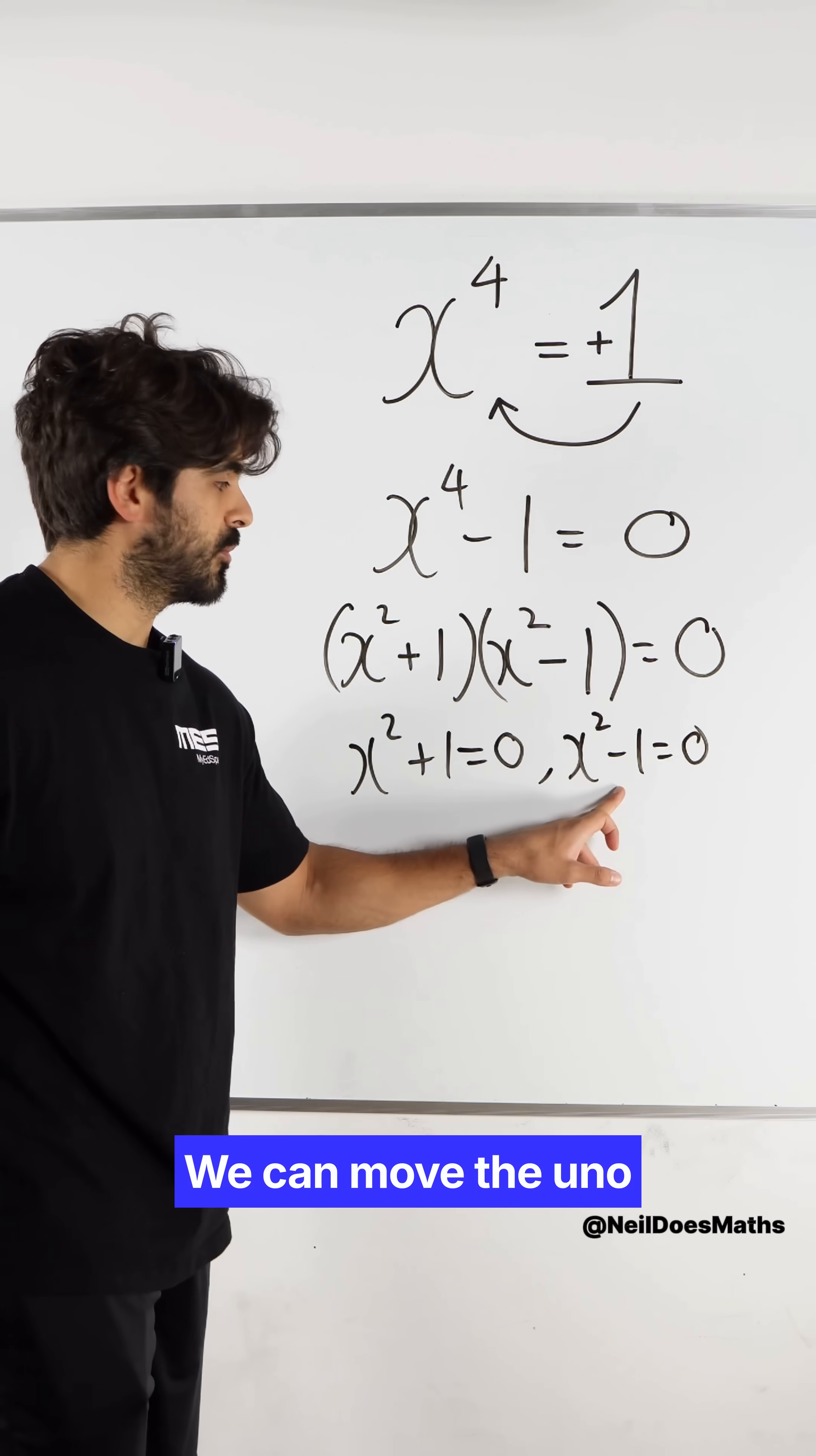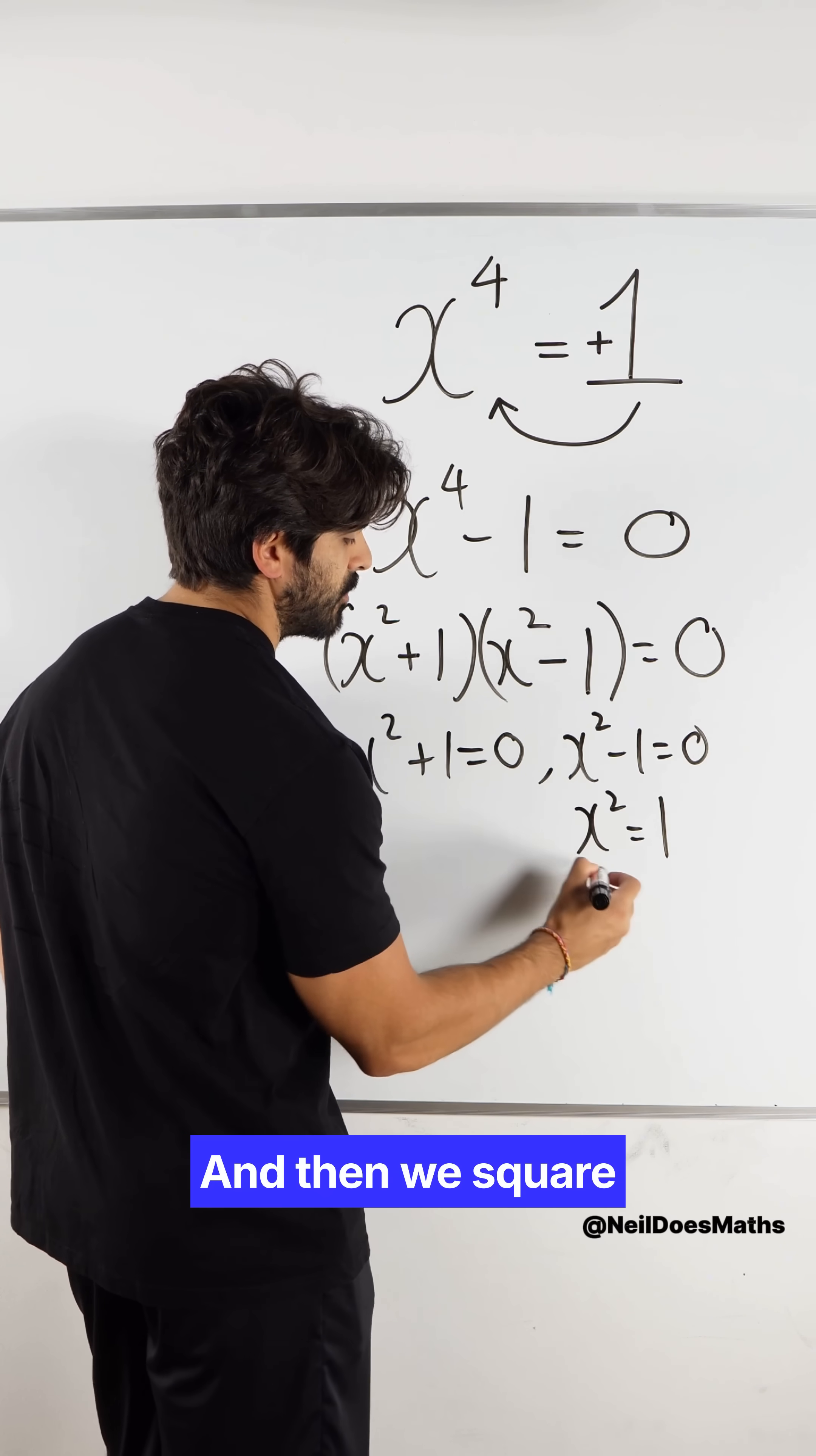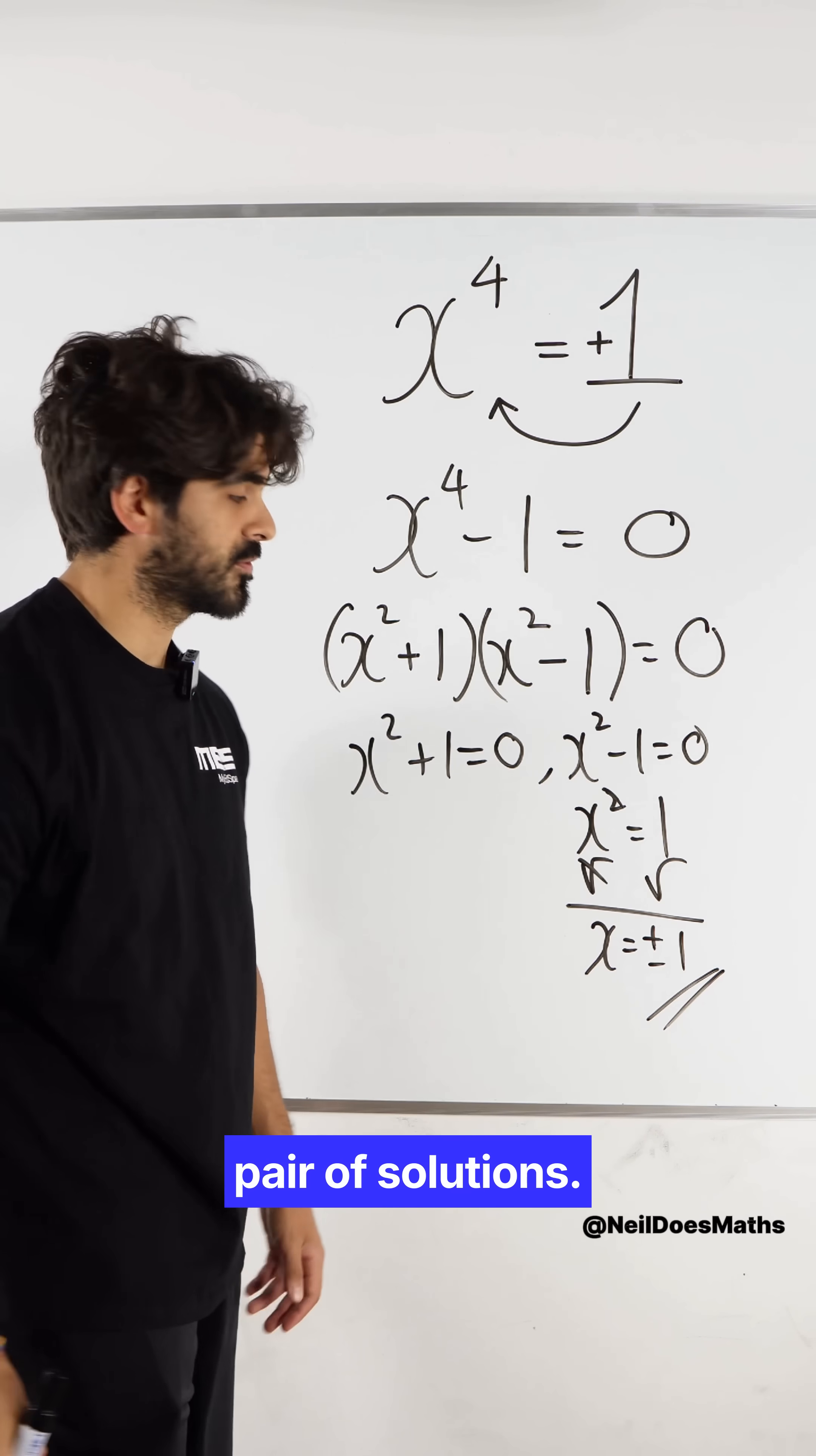Now this is very simple. We can move the one back to the right. We get x squared is one and then we square root both sides. So we're left with x is plus or minus one, which was one of our original pair of solutions.